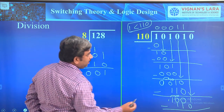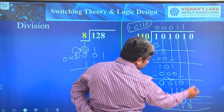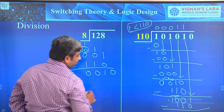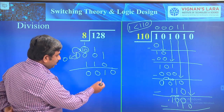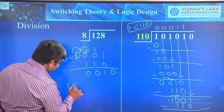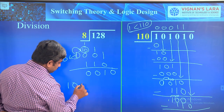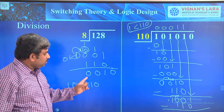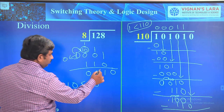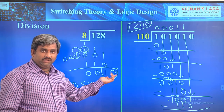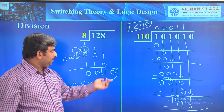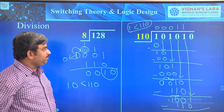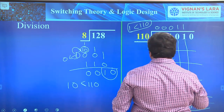After subtracting, the result carries forward with remainder. Bring down the next bit: we have 10. Since 10 is less than 110 and there are no more bits to bring down, 10 is the remainder. We cannot divide 10 by 110. So this is our final answer.